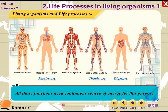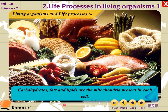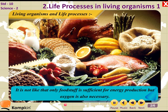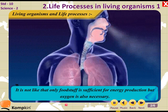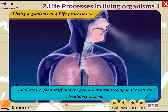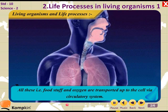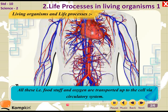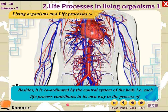All those functions need a continuous source of energy. Carbohydrates, fats, and lipids are broken down in the mitochondria present in each cell. It is not only foodstuff that is sufficient for energy production — oxygen is also necessary. All these, that is foodstuff and oxygen, are transported to the cell via the circulatory system, and it is coordinated by the control system of the body.